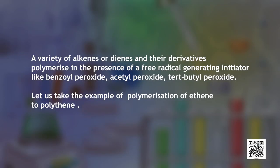We will now talk about free radical mechanism. As shared earlier, it is commonly followed by reactions undergoing addition polymerization. A variety of alkenes or dienes and their derivatives polymerize in the presence of a free radical initiator like benzoyl peroxide, acetyl peroxide or tert-butyl peroxide. Let us take the example of polymerization of ethene to polyethene.